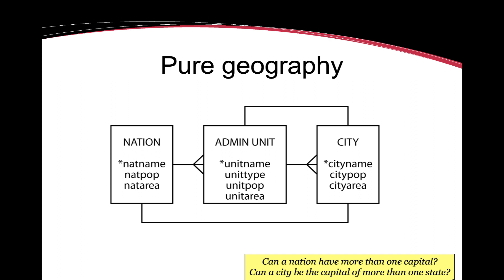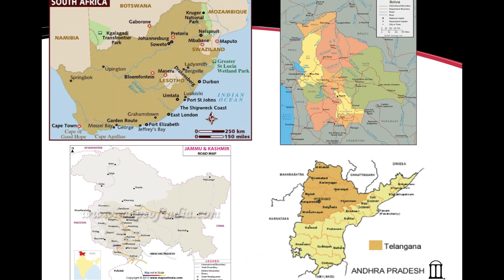However, one does need to consider the question of whether a nation can have more than one capital and whether a city can be the capital of more than one state. In fact, there are several examples of this. In South Africa, for instance, there are multiple capitals. Bolivia also has multiple capitals. States in India like Jammu and Kashmir and Andhra Pradesh or Telangana have many cities as the capital.